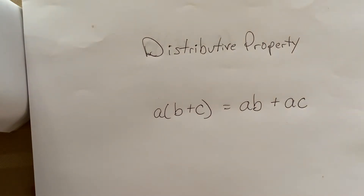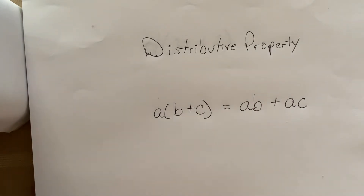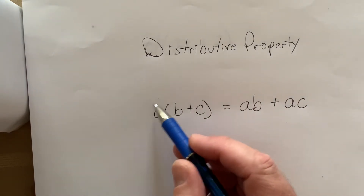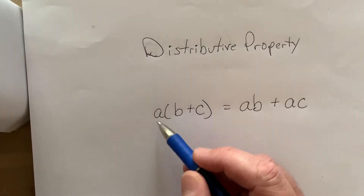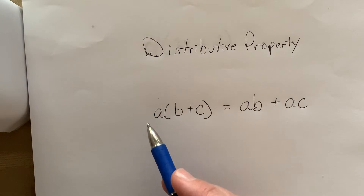Another thing to notice is the parentheses. One of the first things you'll learn in algebra — as well as any other math class — is that when you see parentheses, the first thing you want to do is get rid of them. So how do you get rid of them? You start with the factor on the outside of the parentheses — I've put an 'a' here just to represent it. This 'a' can be anything: a number, a variable, or a number with a variable.